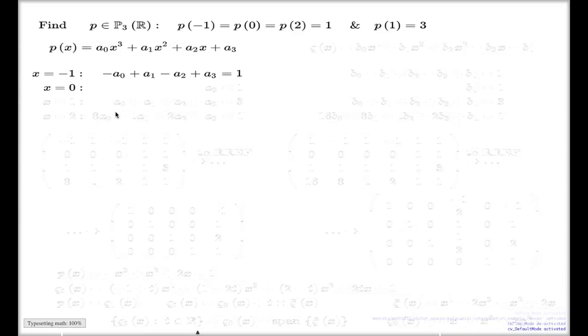The value at x = 0 is simply a₃ = 1. The value at x = 1 is simply the sum of my unknowns: a₀ + a₁ + a₂ + a₃ = 3.